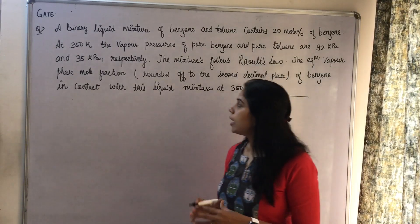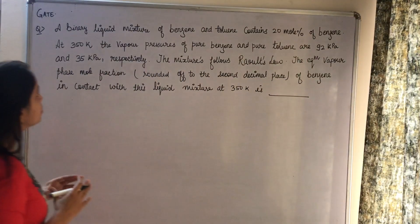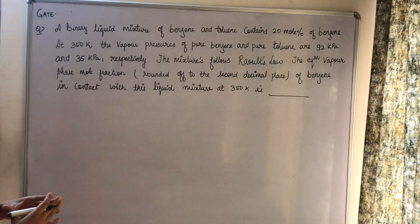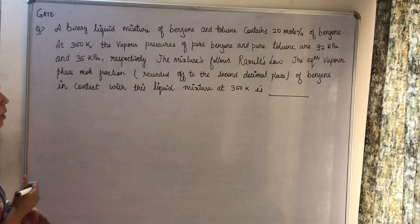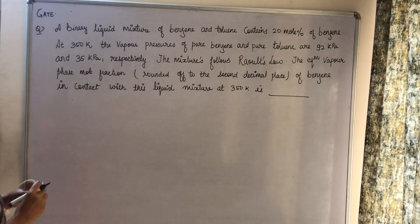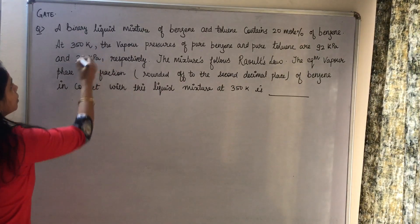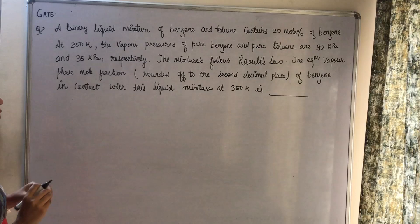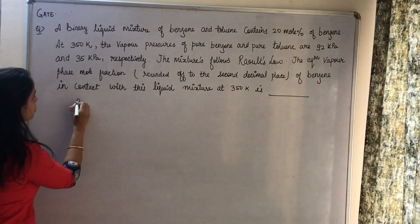Now let's discuss the next question. The question is: a binary liquid mixture of benzene and toluene contains 20 mole percent of benzene at 350 Kelvin, and the vapor pressures of pure benzene and pure toluene are...